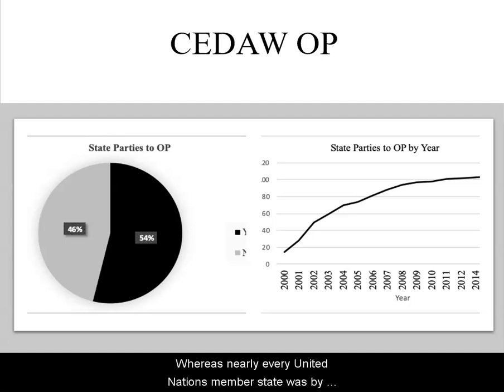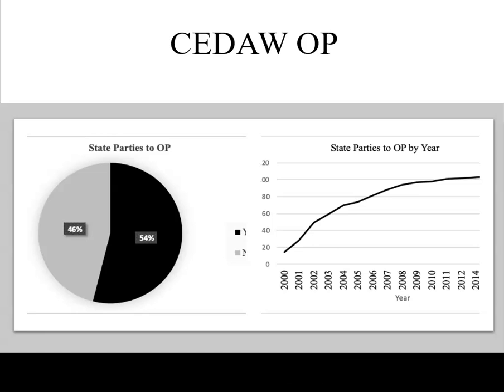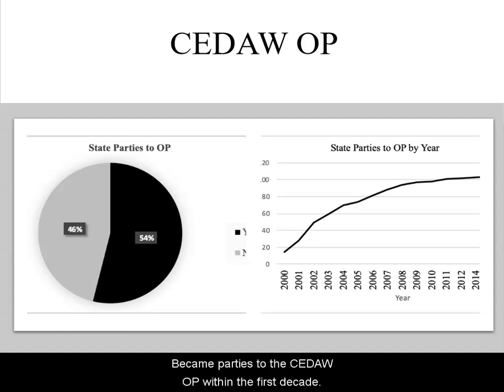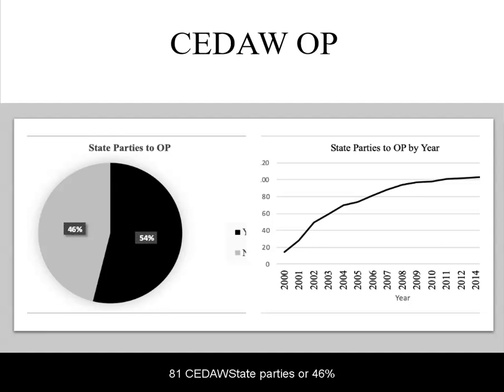Whereas nearly every United Nations member state was by then a state party to CEDAW, a little over half — or 104 nation states, 54 percent — became parties to the CEDAW OP within the first decade. 81 CEDAW state parties, or 46 percent, did not become parties to the CEDAW OP.